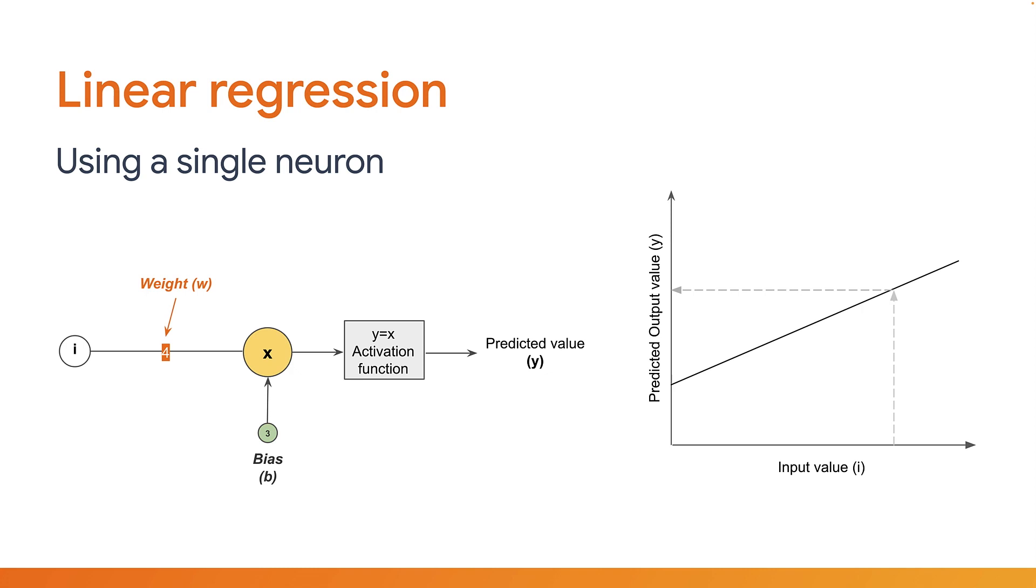In this neuron, there is now a single input value, let's call it i for short. It then has a single weight, that you can call w, and a single bias, let's call it b. And then an activation function, just like before. Now, in this case, let's make the activation function effectively useless by setting it to simply pass through the input value, whatever value it might be. You can do this by setting the activation function to be the identity function, which is defined as y equals x. That means if x is 2, y will be 2. If x is 100, y would be 100. It just passes through the value.